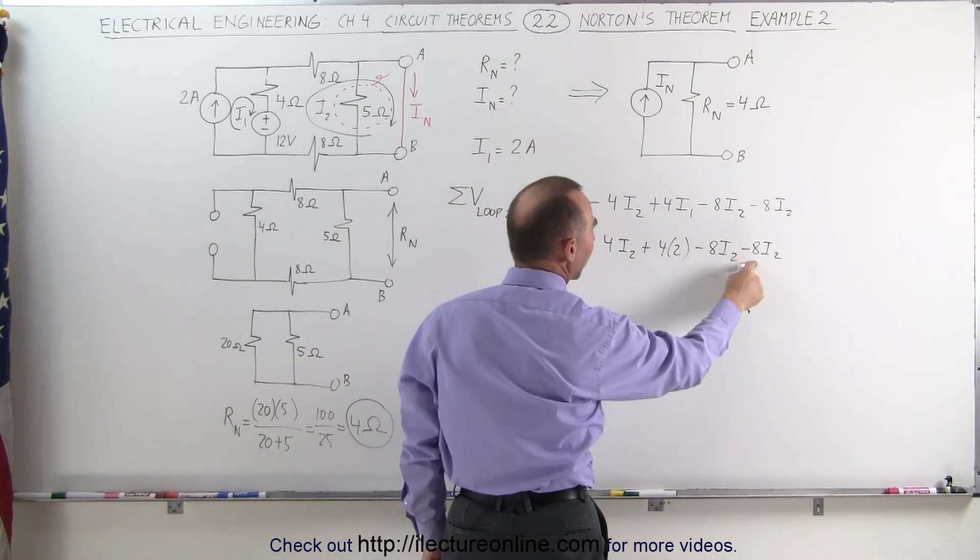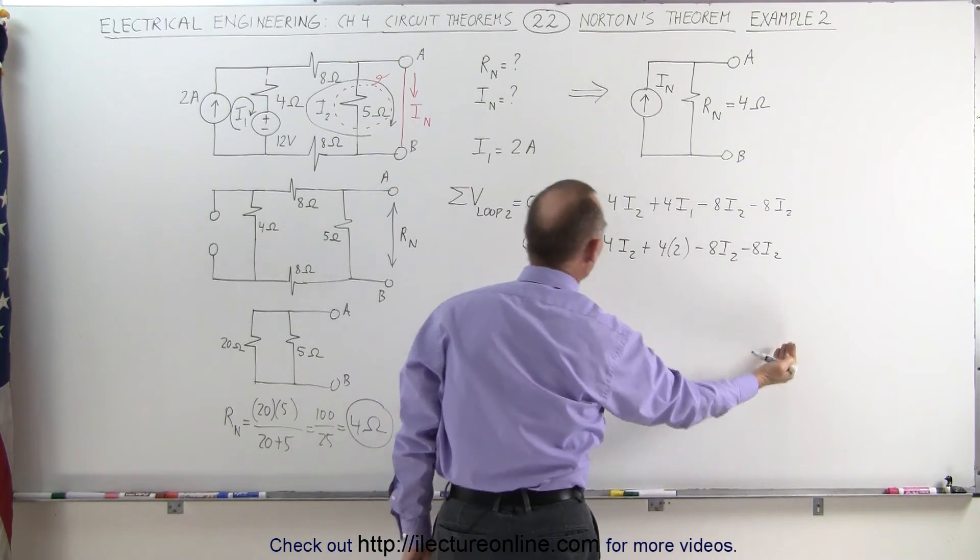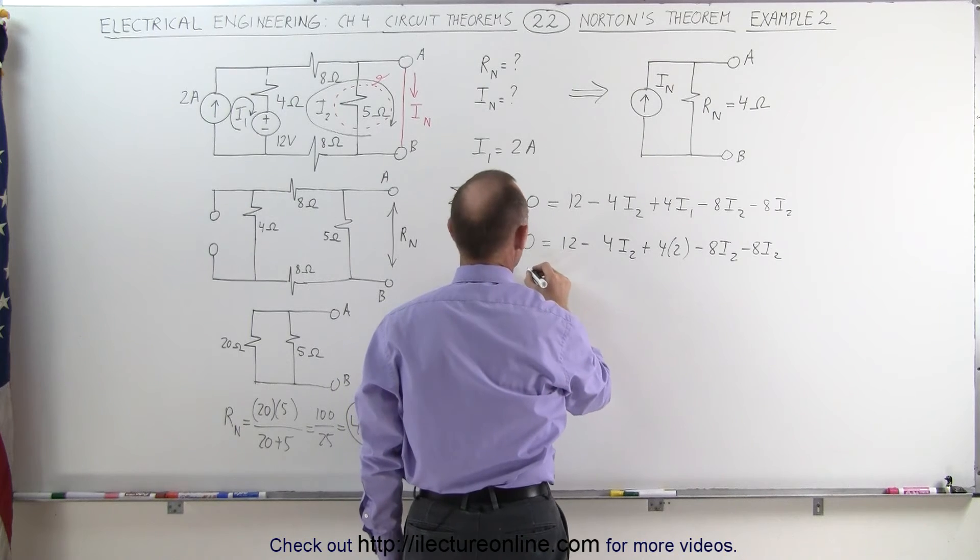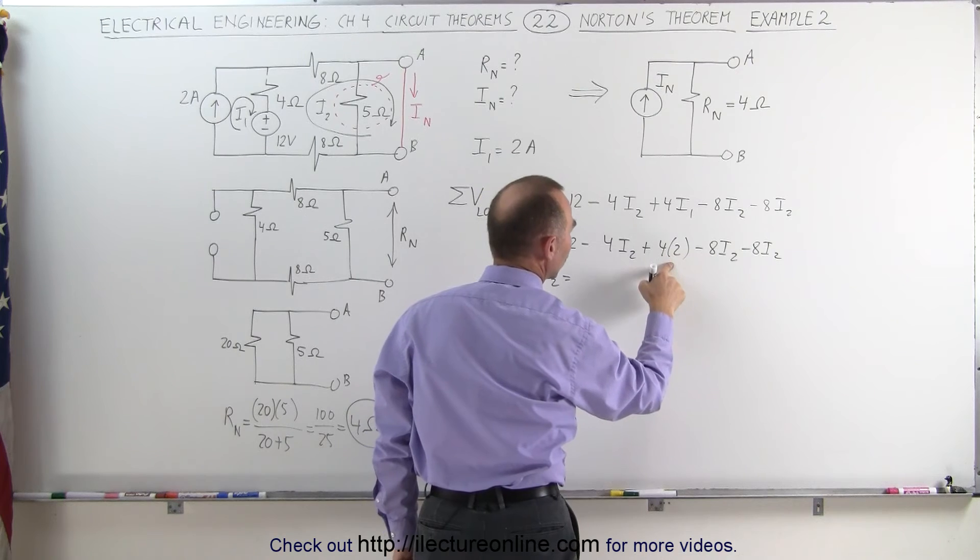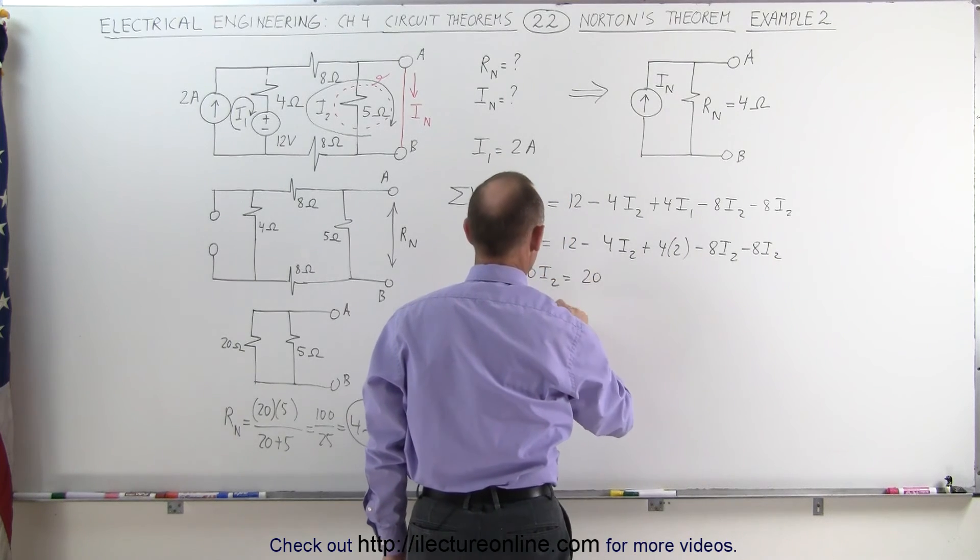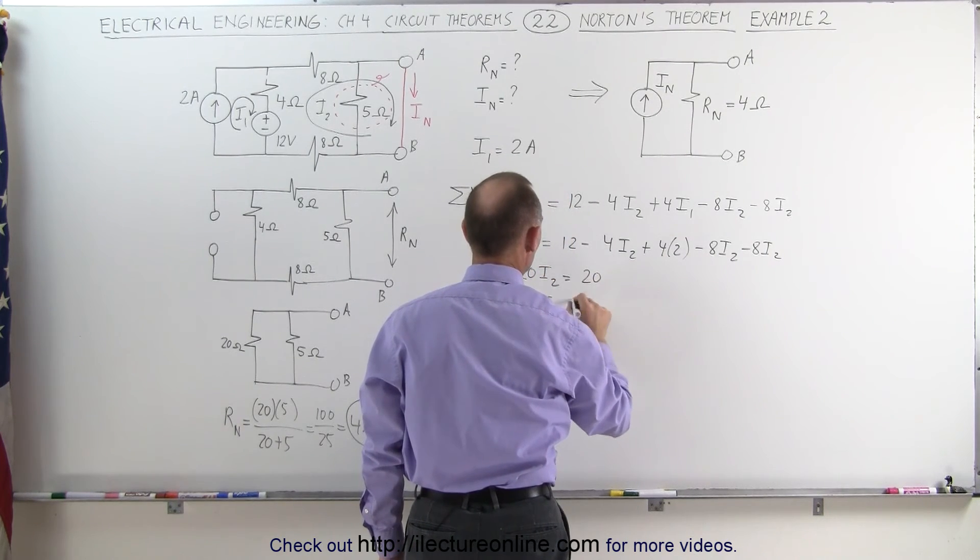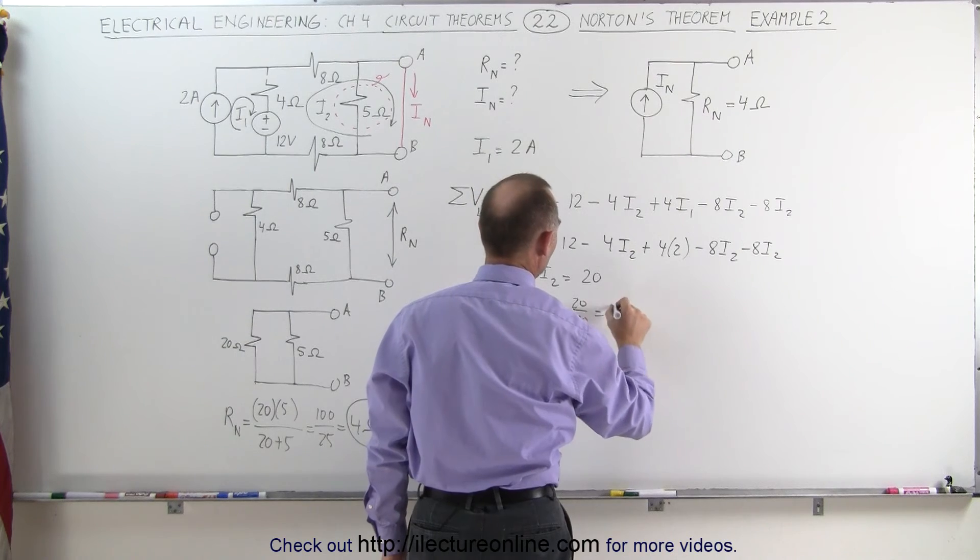Minus 4, minus 8, minus 8, that's minus 20. Move all that to the other side of the equation. We get a positive 20 I2 equals 12 plus 8 is 20. That would be 20. And that means I2 equals 20 divided by 20 which is equal to 1 amp.